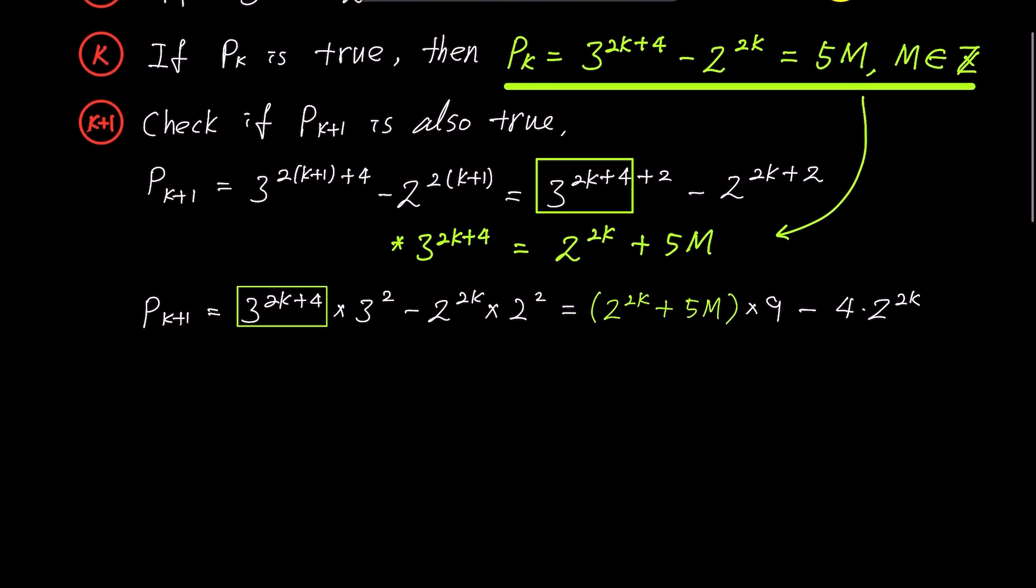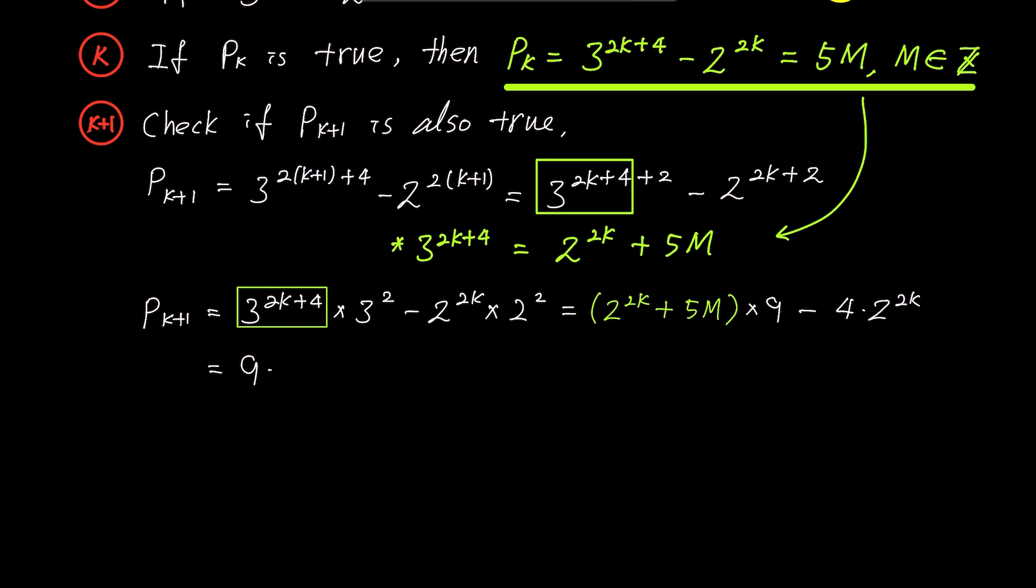Expanding the parentheses and rewriting the expression, we get 9 times 2 to the power of 2k plus 45m minus 4 times 2 to the power of 2k. The first and last term can be combined through addition, leading to 5 times 2 to the power of 2k plus 45m. Since this expression has 5 as a common factor, we can factor it out resulting in 5 times 2 to the power of 2k plus 9m. Ultimately, this expression is also divisible by 5.